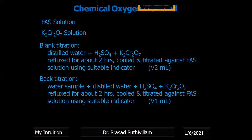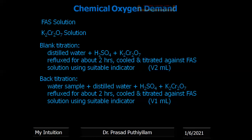In the blank titration, we do not use the wastewater sample — distilled water is added along with sulfuric acid and potassium dichromate, then refluxed for two hours, cooled, and titrated against ferrous ammonium sulfate solution using a suitable indicator. The titre volume is recorded as V2 ml. In the back titration, the water sample is mixed with potassium dichromate, which oxidizes the organic impurities during refluxation. Refluxation is done to prevent chemicals from escaping — they are condensed back so the complete reaction takes place. Whatever potassium dichromate remains after reacting with the organic impurities is titrated against FAS, giving volume V1 ml.